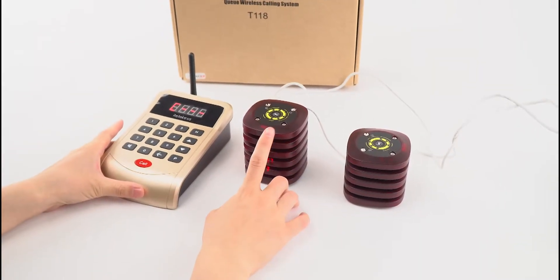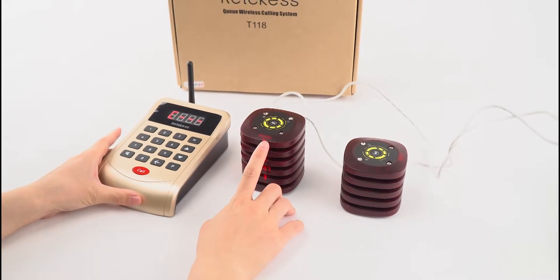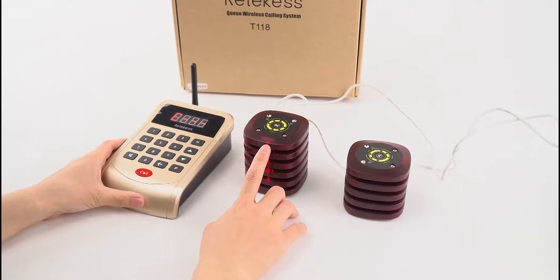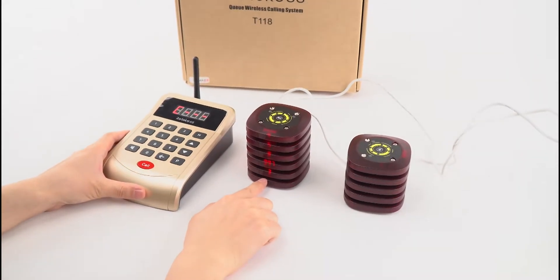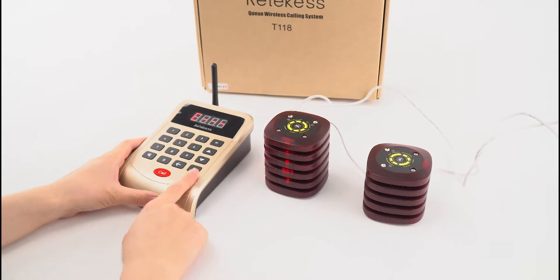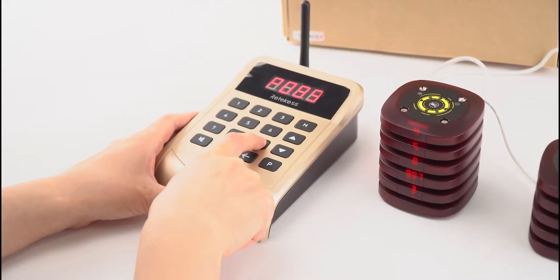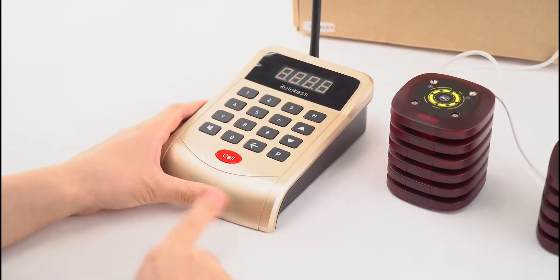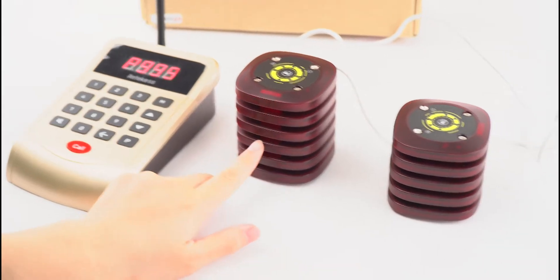I will show you how to program the numbers. This one is 4 and we can change it to 24. First, we need to place it in the charging base and press the number P, and then press 999 and call. You can see that all the lights on the pagers are flashed like this.